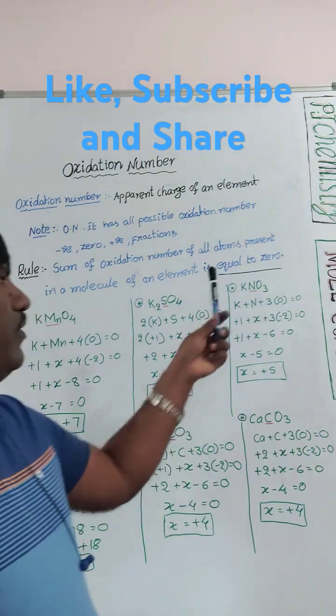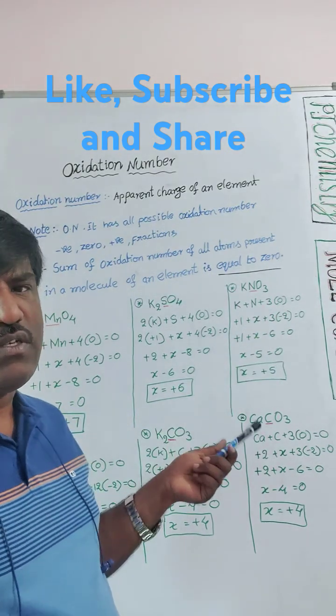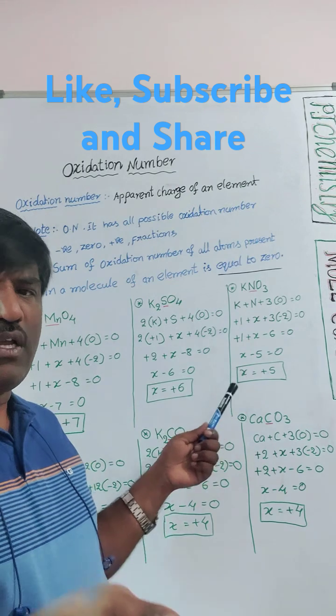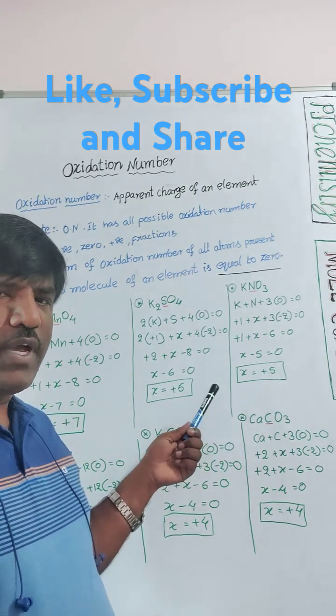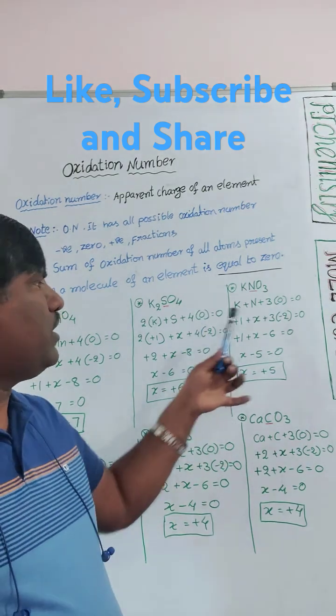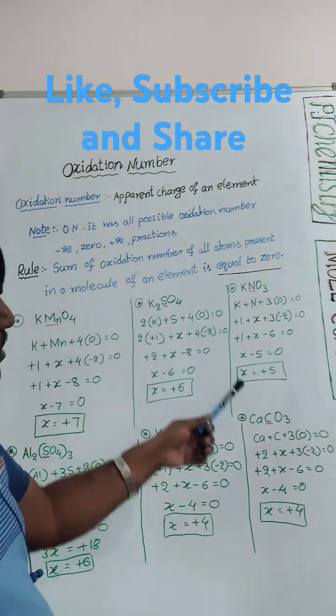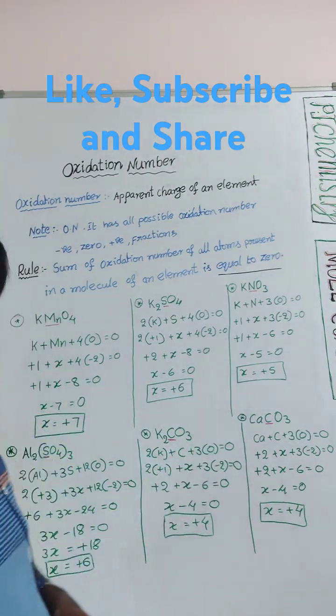Potassium oxidation number +1. KNO3: 1 potassium plus 1 nitrogen plus 3 oxygens equals zero. Potassium loses one electron to get stability of argon, so +1. Nitrogen x we need to find out. 3 times oxygen gains 2 electrons to get stability of neon. Simplify, you get x value +5.